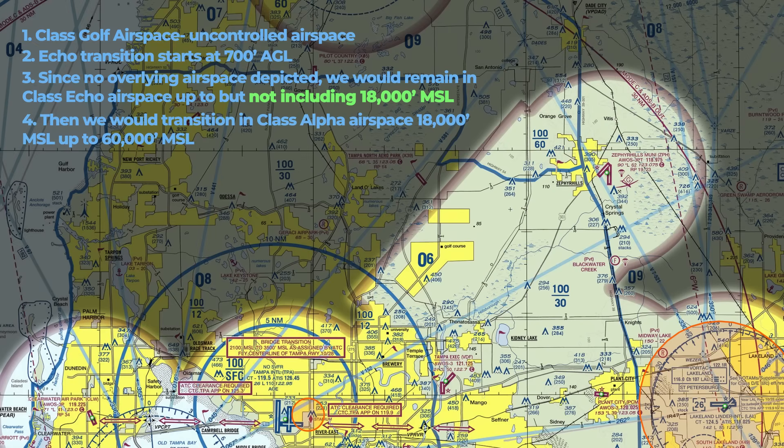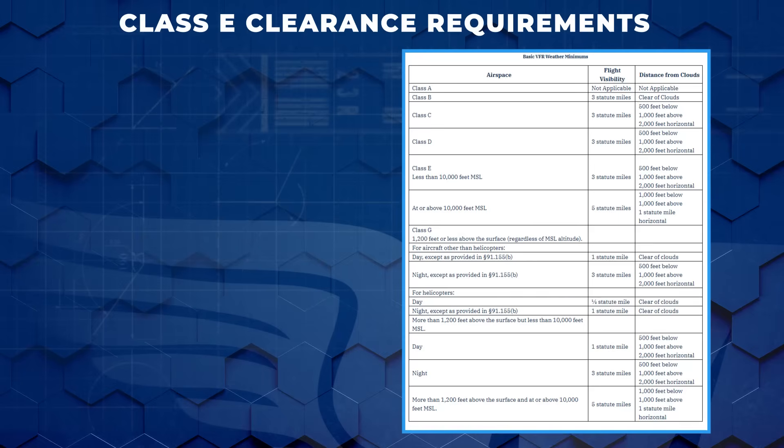At 18,000 feet MSL we would enter Class A airspace, which is also not depicted on the sectional chart. Now if we want to be really nitpicky, Class Alpha airspace actually ends at flight level 600 — so what would we enter after that? We'd go right back into Class Echo airspace, all the way to space. But we're going to leave that to NASA.